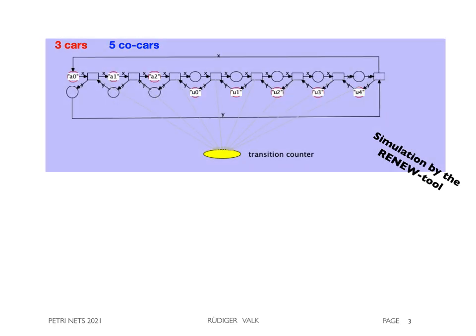We start with some few steps and then switch to an automatic run. The transition counter shows 120 transitions.